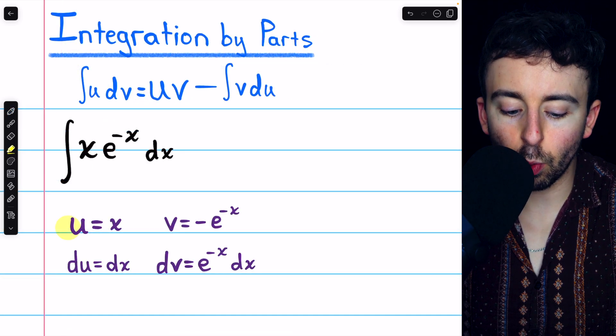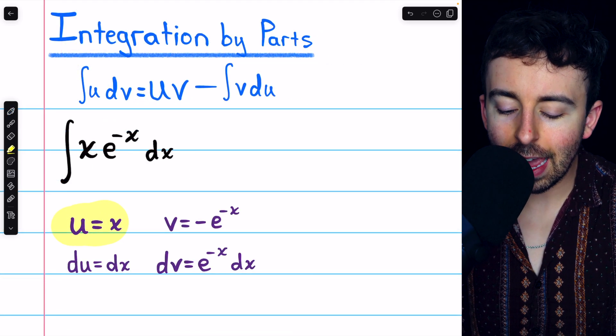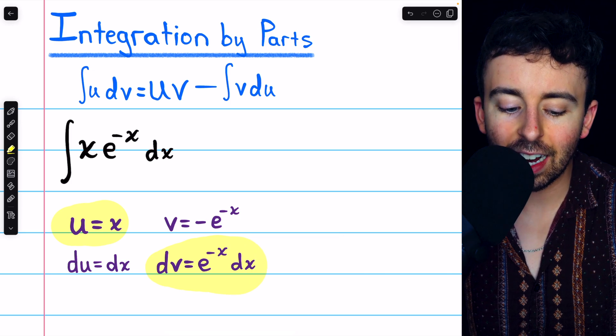So in this case, it works well to let u equal x and dv equal e to the negative x dx.